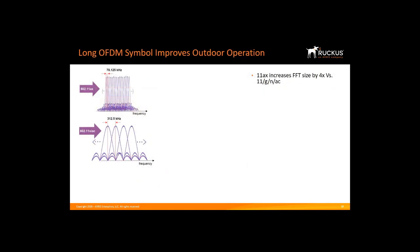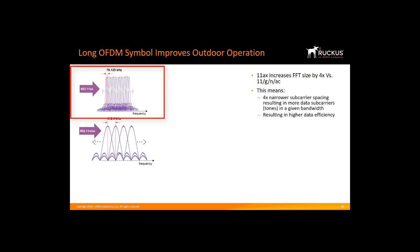Let's look at how OFDM Long Symbol improves outdoor operation. 11AX maintains the same channel bandwidth as 11AC, such as 20, 40, or 80 MHz. However, it increases the Fast Fourier Transform, or FFT, size by a factor of 4. This means there are four times more subcarriers in a given bandwidth, resulting in a four times reduction in the subcarrier spacing.